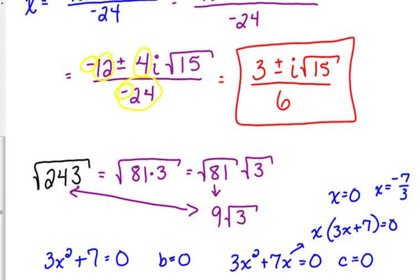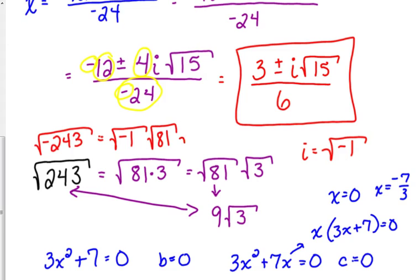The i is, i is equal to the square root of negative 1. So the same way that we're simplifying these, like if that were the square root of negative 243, technically what you're looking at is the square root of negative 1, the square root of 81, and the square root of 3.